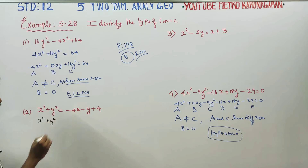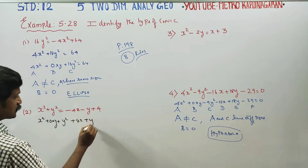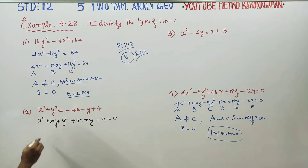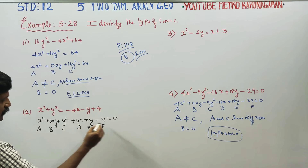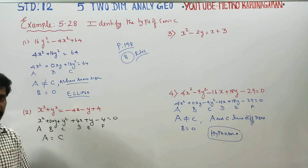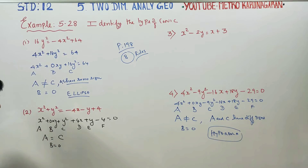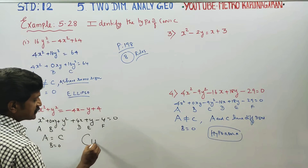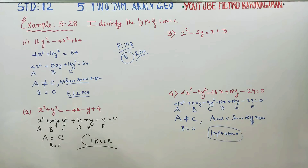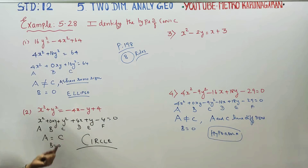For the next equation with x square plus y square, the xy term is not present. The coefficient of x square is equal to the coefficient of y square. B is equal to 0, and the coefficients are equal. Therefore, this conic represents a circle.